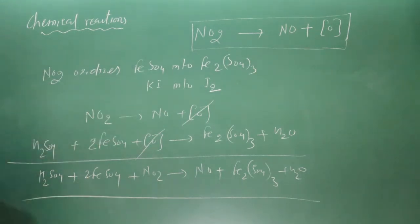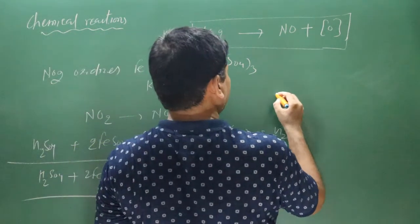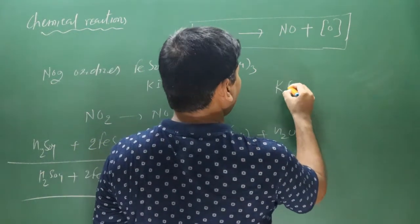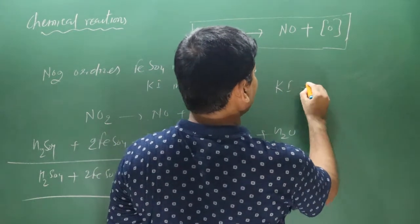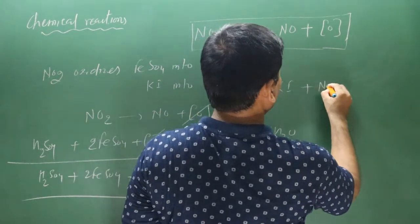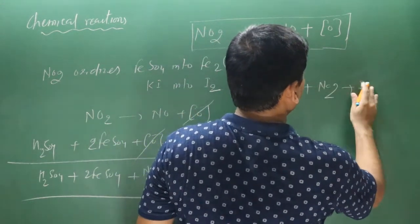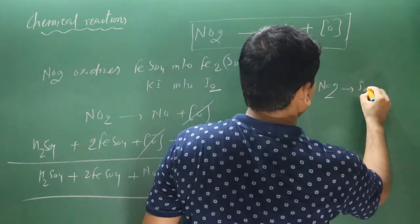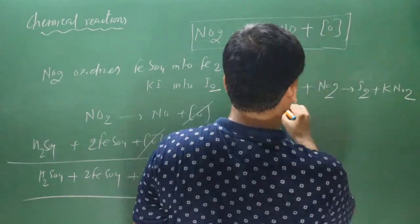For potassium iodide: KI reacts with nitrogen dioxide. Iodide (−1) is oxidized to iodine molecule (0). Nitrogen goes from +4 (NO2) to +3 (NO2−). Balanced: 2KI + NO2 → I2 + 2KNO2. This is a complete redox reaction.